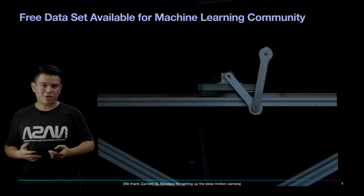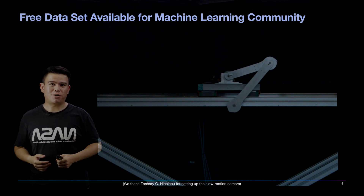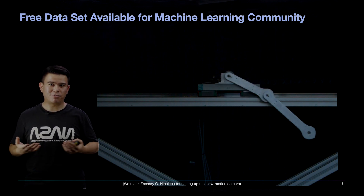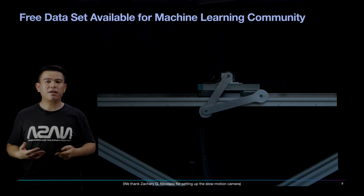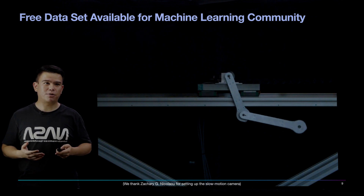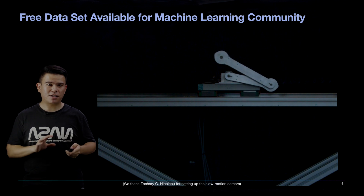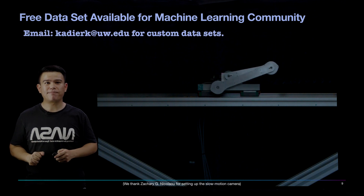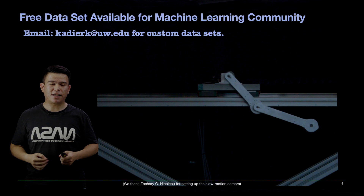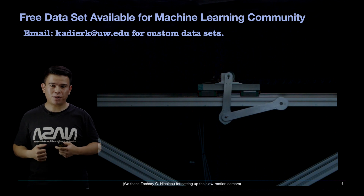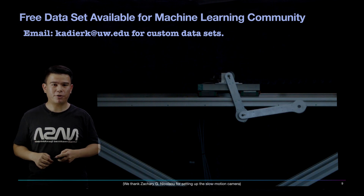Besides controls experiments, we can also do system identification experiments. That's why we have an open-access dataset, and we even have a high-speed motion camera capture dataset as well. If you're interested, definitely check it out. And if you want a custom dataset, please feel free to email us and we can generate one for you.